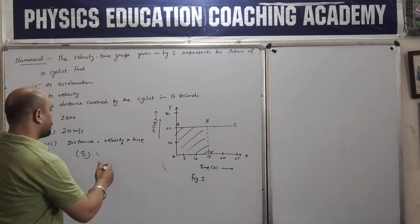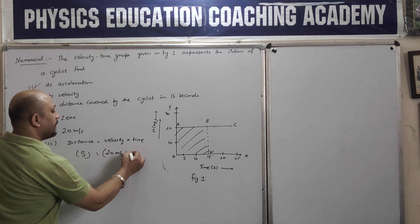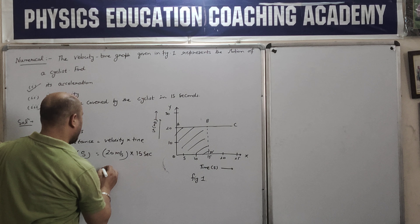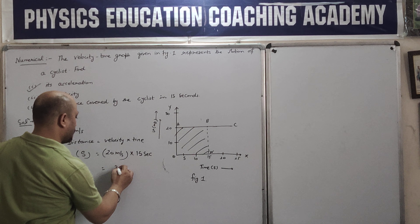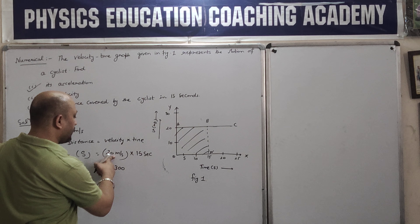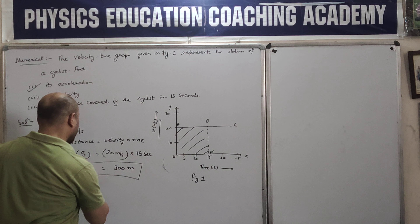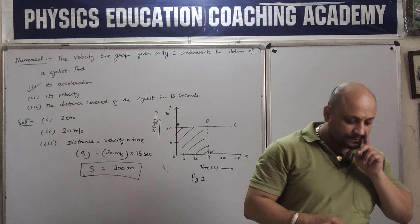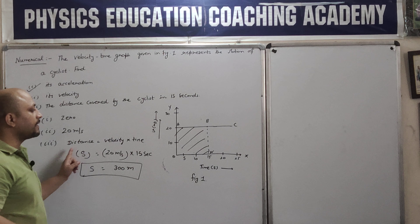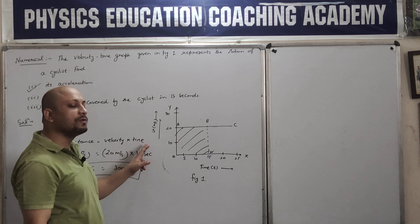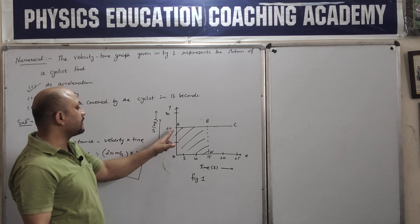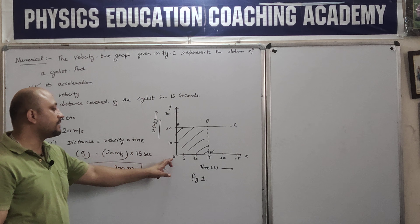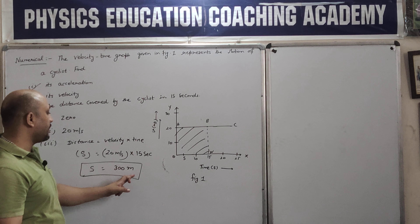I denote distance covered as S. So what is the velocity? At 0: 20, at 5: 20, at 10: 20, at 15: 20 - so velocity = 20 meter per second. Multiply by time: time consumed was 15 seconds. So the answer is 20 × 15 = 300 meter. This means the cyclist traveled a distance of 300 meters. Distance formula: velocity × time = 20 m/s × 15 s = 300 meter.